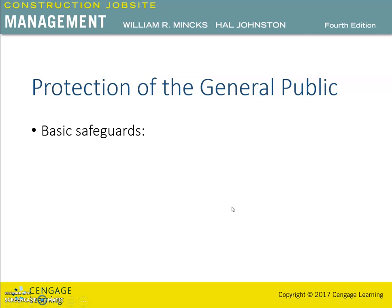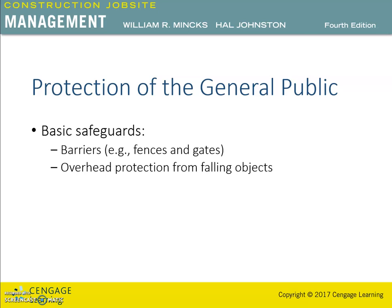Regarding the protection of the general public: most construction activities occur where the general public has some form of access. The nature of construction work attracts people of all ages to the job site. It is the contractor's responsibility to warn the general public of all hazards and to isolate the site from the casual passerby. At all times, signs, barricades, and public protection devices must be visible and in place. Basic safeguards include barriers in the form of fences and gates, overhead protection from falling objects, and signage for hazard and directional purposes.